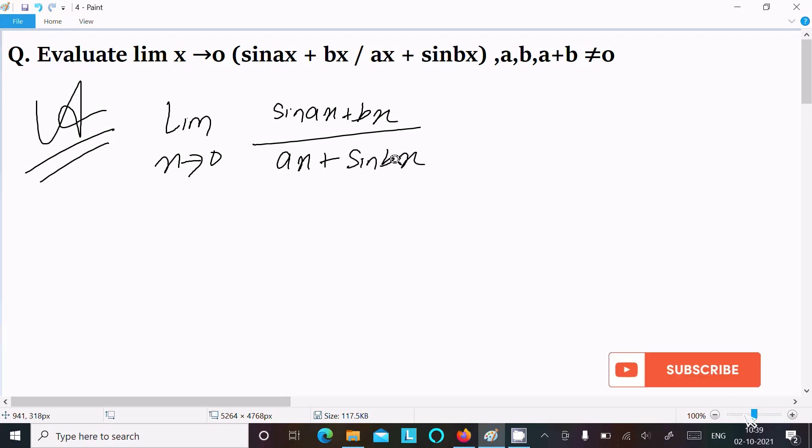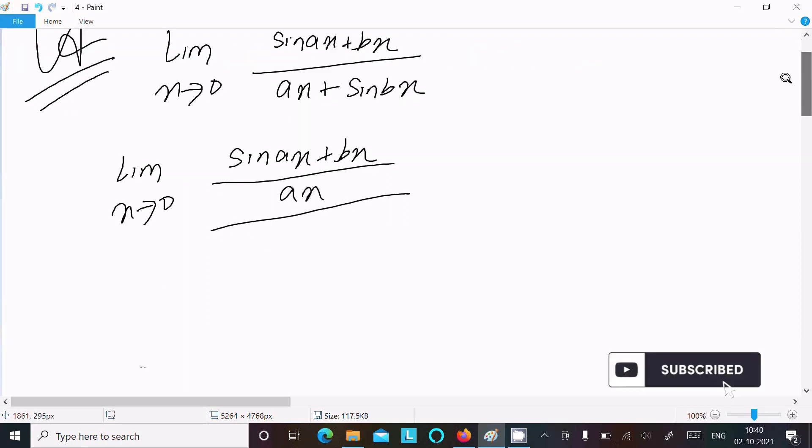We can solve this by dividing both numerator and denominator by ax. Writing it out: lim as x→0 of (sin(ax) + bx)/ax over (ax + sin(bx))/ax.